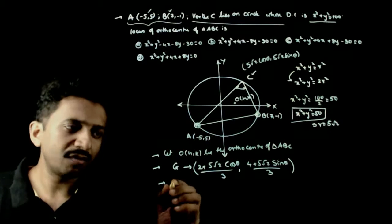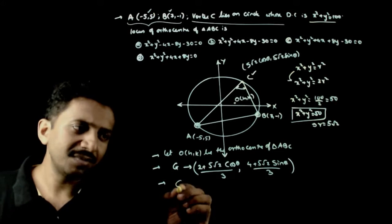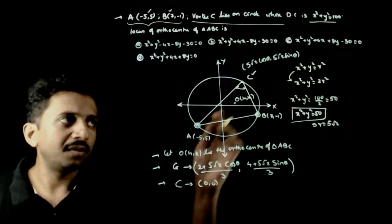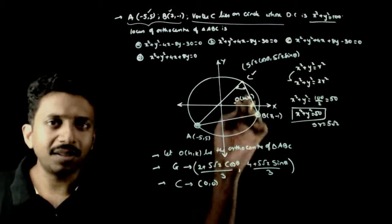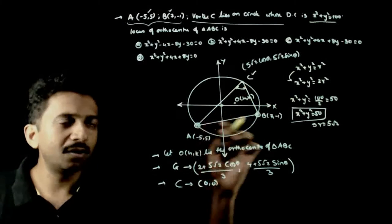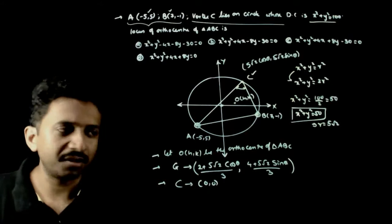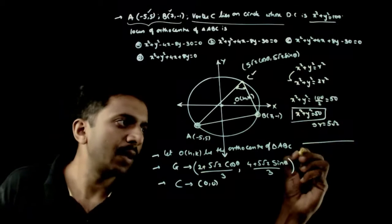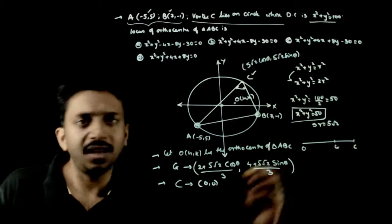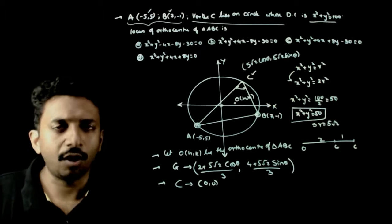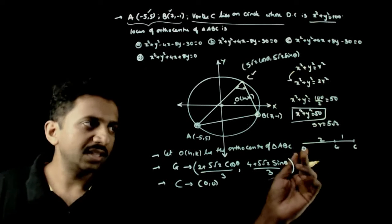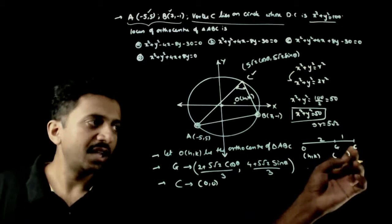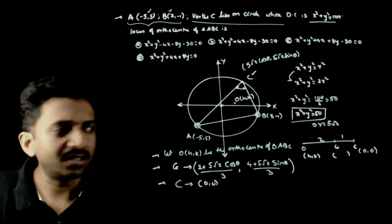What is the circumcentre of triangle ABC? The circumcentre is obviously origin, 0 comma 0, since all three vertices lie on the circle with centre at origin. So the circumcircle will always have centre 0 comma 0. Now, by Euler's line, O, G, and the orthocentre maintain a ratio of OG to GH equal to 2 is to 1, where O is the orthocentre which is H comma K, G is the centroid, and the circumcentre is 0 comma 0.